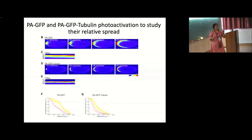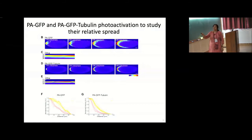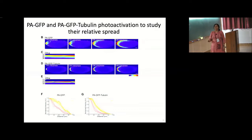Looking at a kymograph, the spread of the molecule happens essentially enriched at the cortex. There is a distinct region in the center where it doesn't go, so there must be some way of creating this boundary. Both PA-GFP and PA-GFP tubulin are basically getting enriched at the cortex. We can look at their spread in the cortical direction — XY — versus the depth of the embryo — XZ. The rate of spread through that really crowded environment in the cortex is greater than through the depth of the embryo.